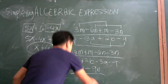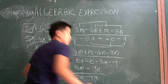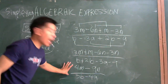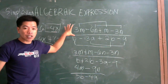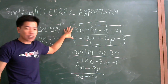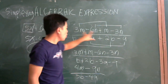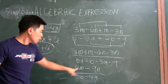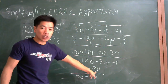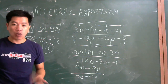This is how we simplify a rational algebraic expression, reducing it from many terms down to just two terms.